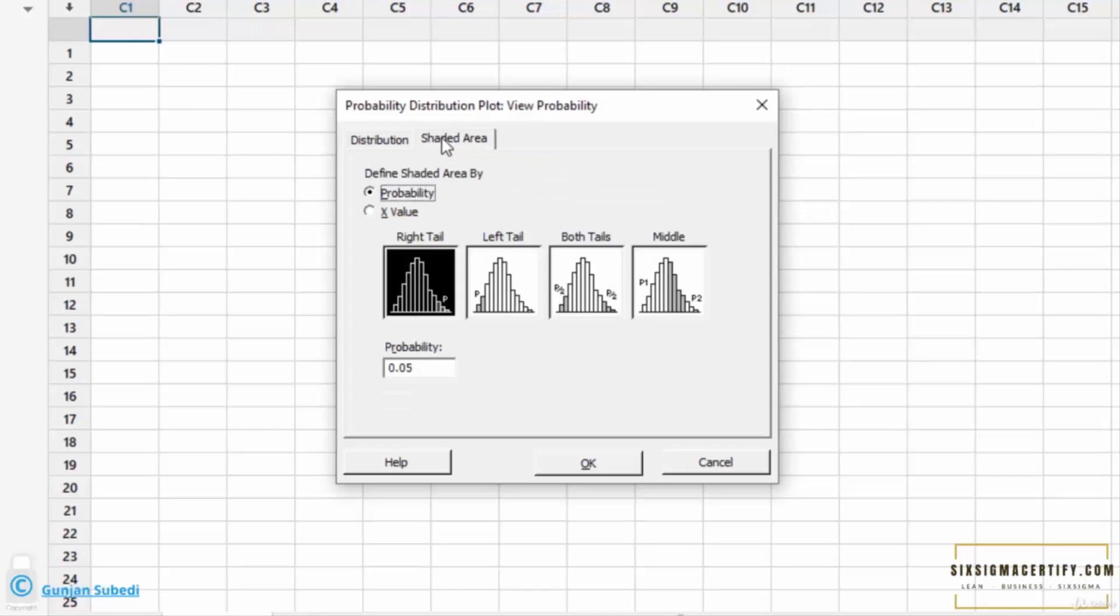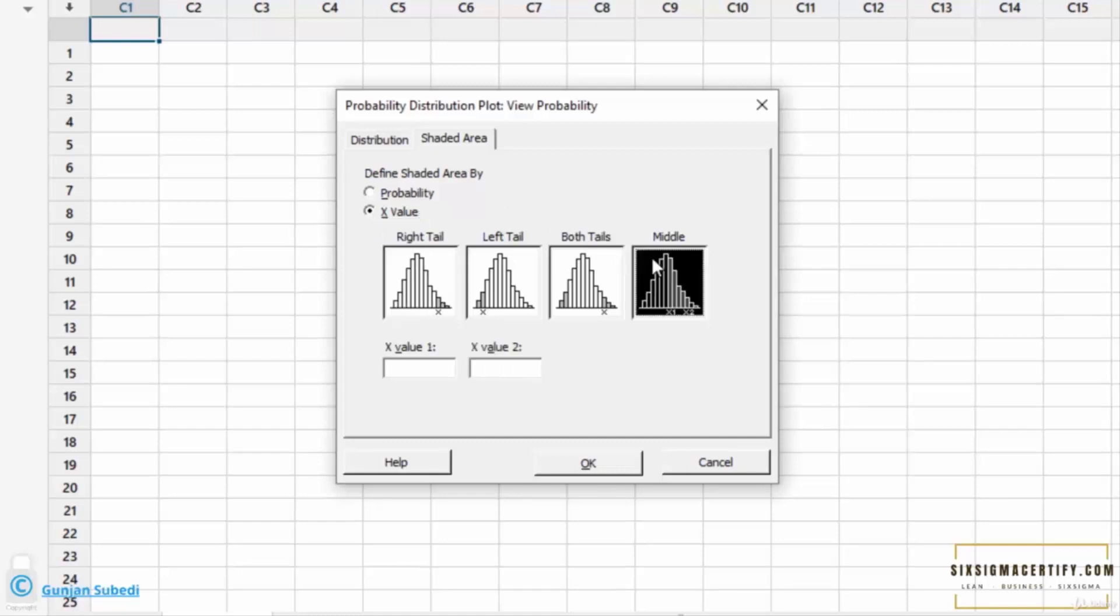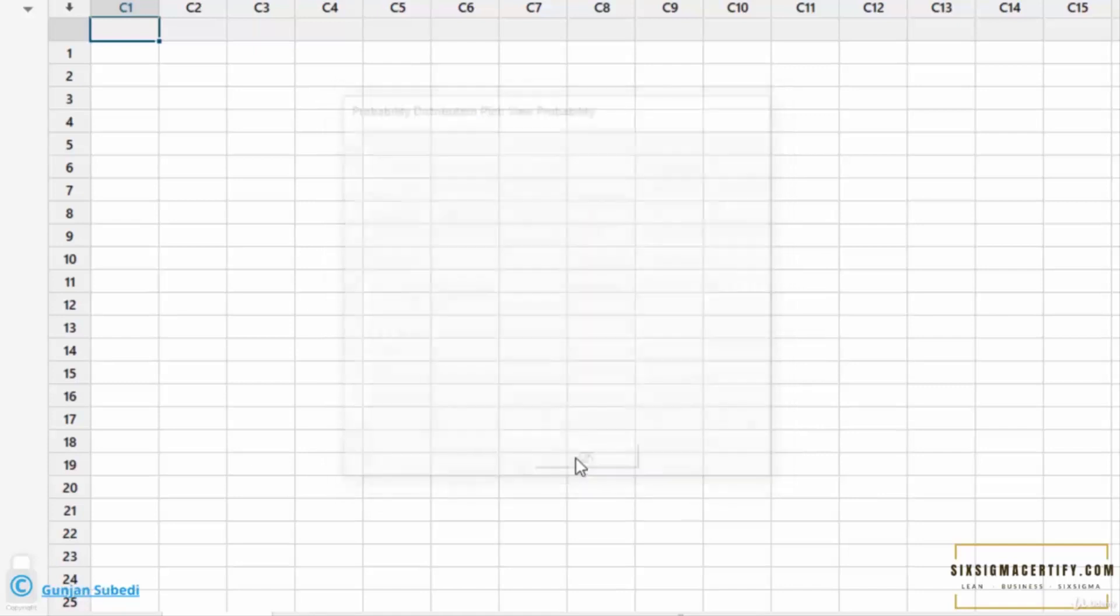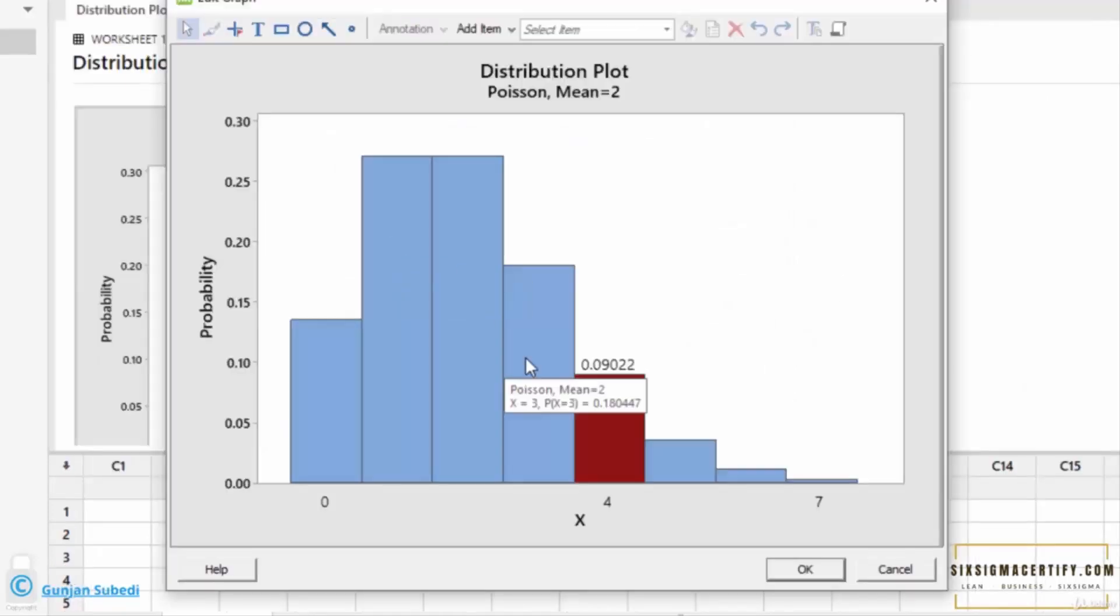Now we want to find the probability for exactly 4 crashes in any given year. We select X value because the number 4, which is the number of crashes in any given year, is in numerical form. We select X value and then select Middle. Since we do not have a second middle value, we write 4 at both X value 1 and X value 2 and click OK. A graph is generated. The probability for exactly 4 crashes is 9%, which is pretty high.